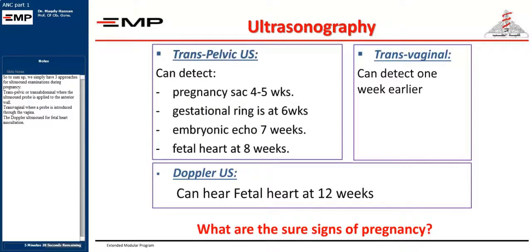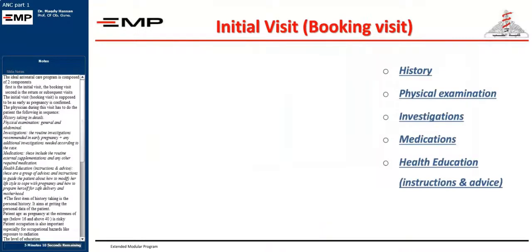To sum up, we simply have three approaches for ultrasound examinations during pregnancy: transpelvic or transabdominal where the ultrasound probe is applied to the anterior wall; transvaginal where a probe is introduced through the vagina; and Doppler ultrasound for fetal heart auscultation. The ideal antenatal care program is composed of two components: first is the initial visit, the booking visit, and second is the return or subsequent visits.